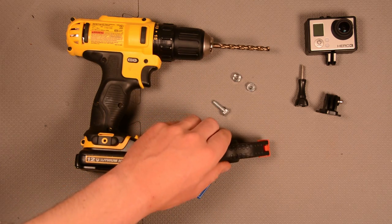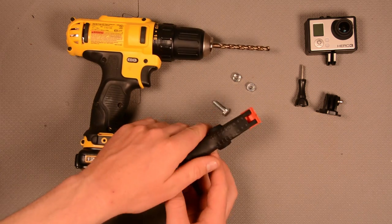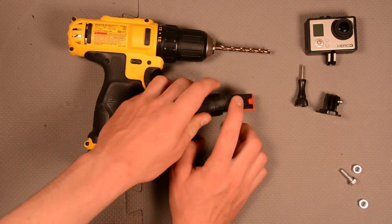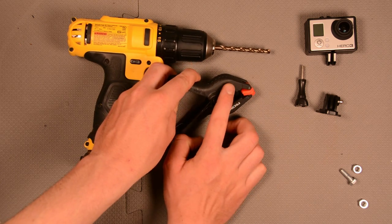To get started, we're just going to pick a spot on our clamp where we want our hole to be. In this case, I'm thinking I'm going to put it on this little ridge right on top of the clamp here.